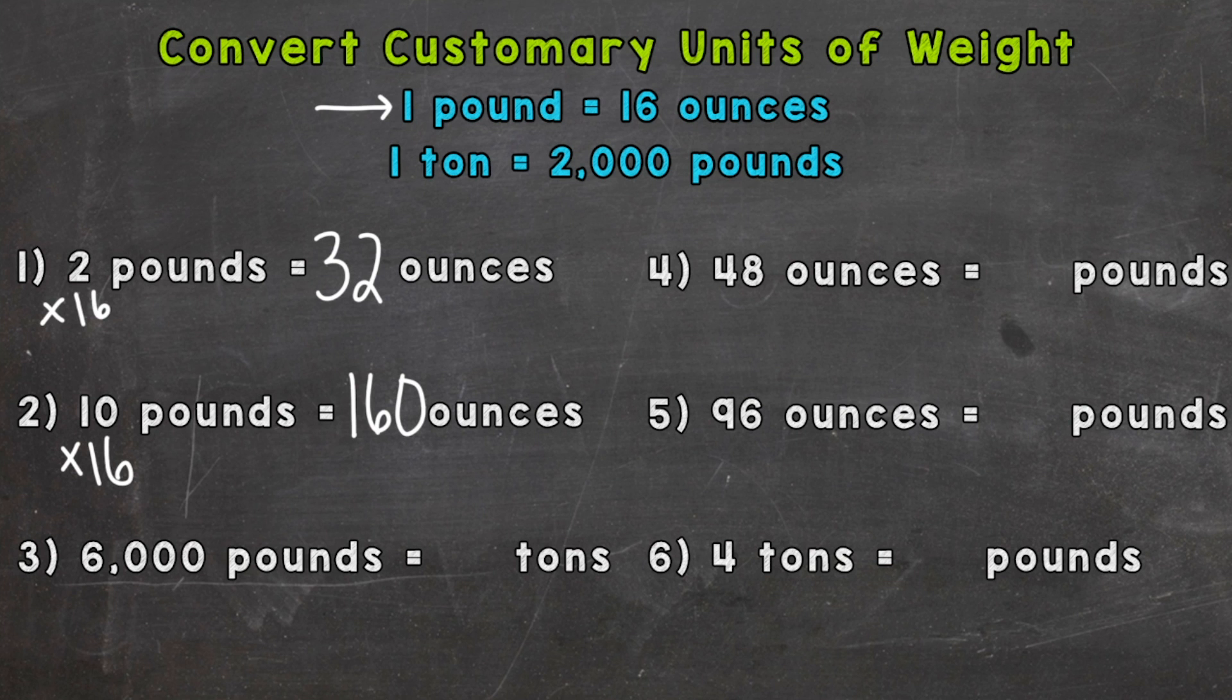Now for number three we're going to go pounds to tons. So 6,000 pounds - well we know 1 ton equals 2,000 pounds, so we need to find how many groups of 2,000 can we pull out of 6,000, because each of those groups of 2,000 is a ton. So we need to do 6,000 divided by 2,000.